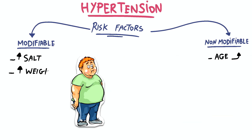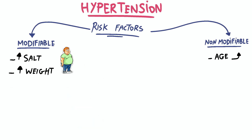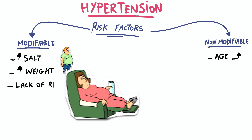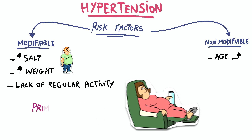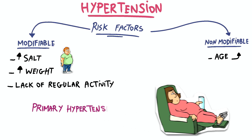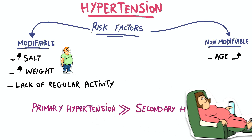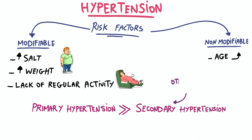Modifiable risk factors include consuming excessive amounts of salt, excess weight which puts extra strain on the heart leading to increased blood pressure, and a lack of regular physical activity. Primary hypertension is more common, while secondary hypertension can be caused by other medical conditions and can benefit from specific treatment.